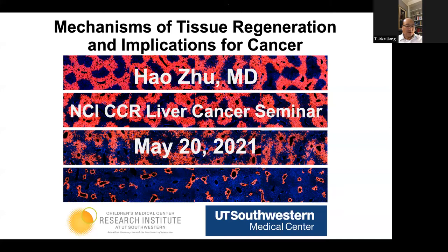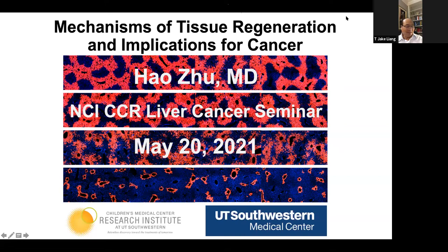Hal's lab is focused on identifying the genes and mechanisms that regulate regenerative capacity in the liver, and understanding how these contribute to hepatocellular carcinoma development. He's also an elected member of the American Society for Clinical Investigation. I got to know him better when we recruited him to the board of editors for Gastroenterology. I respect a lot of his insights in the whole field of liver cancer, although he wasn't trained as a hepatologist.